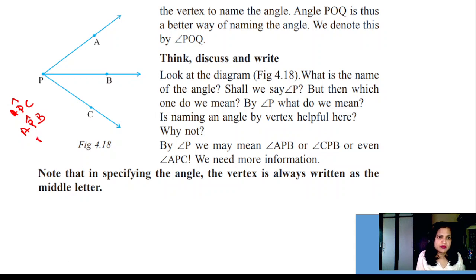If I name P as an angle, which angle is it? This angle, this angle, or this angle? If I name this as angle P, then which angle is it? There is a problem.